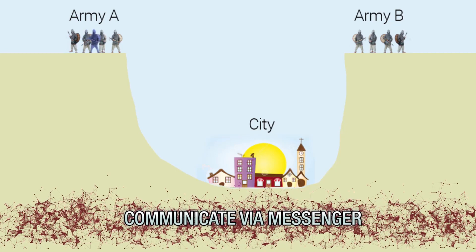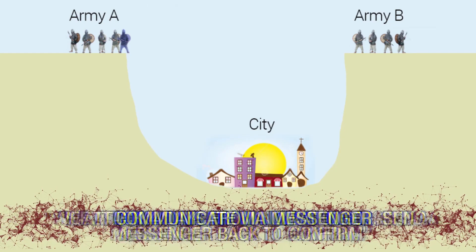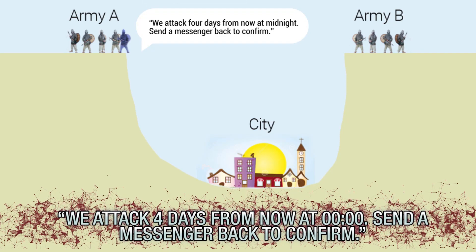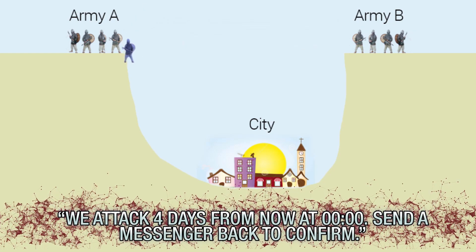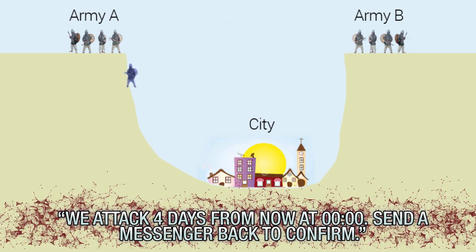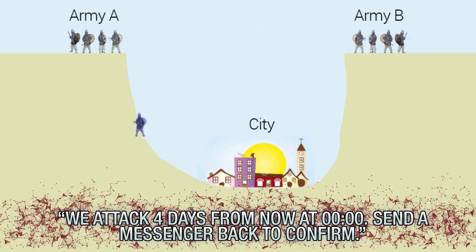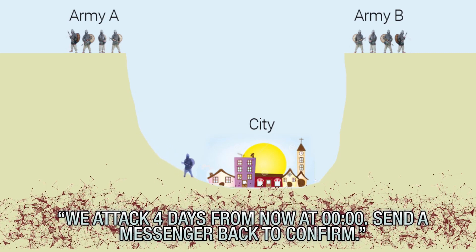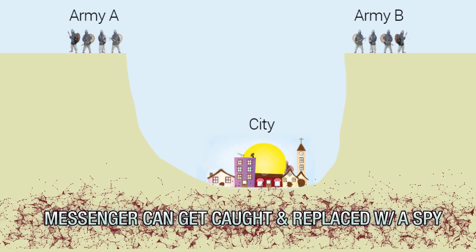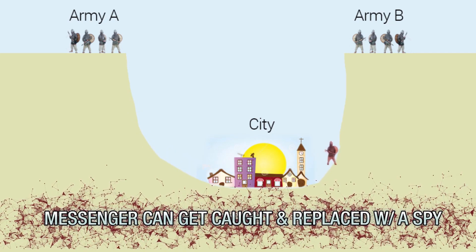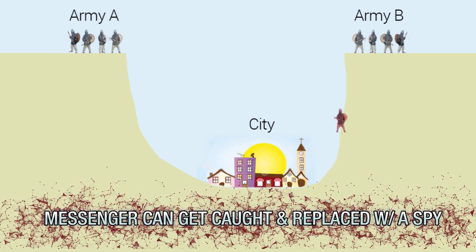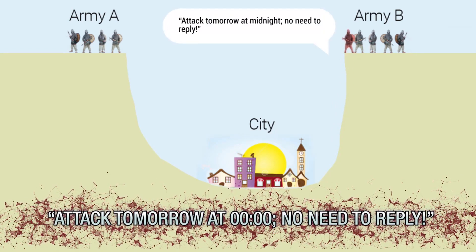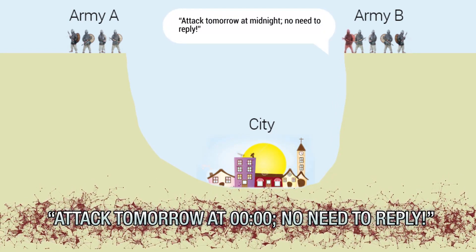One general retreating while the other attacks would lead to a failed attack. The generals can communicate with one another by sending a messenger to deliver a message, like 'we attack four days from now at midnight, send a messenger back to confirm.' But sending the messenger through the town to get to the other side involves a certain risk element. The messenger can get caught and replaced with a spy, who then sends a faulty message to the other side, like 'attack tomorrow at midnight, no need to reply.'